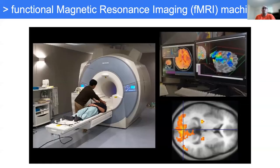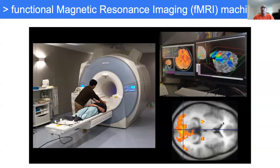This is an fMRI machine. As you can see here, one subject just lies down and we can capture the neural activity. During this capturing, the subject can watch different things. In my case, they are watching grayscale photos. We would like to gather this neural activity and based on that, we want to guess exactly what they watched and reconstruct the image.